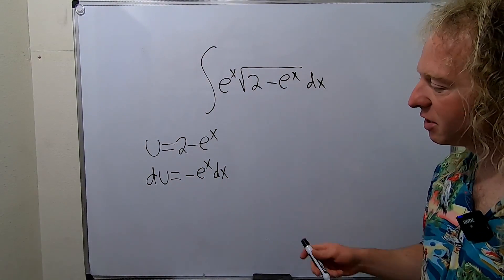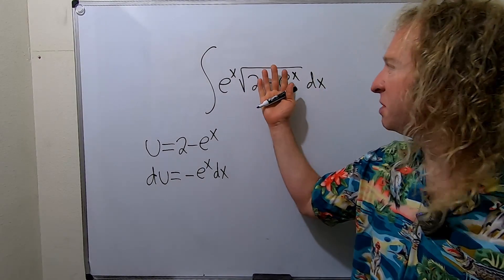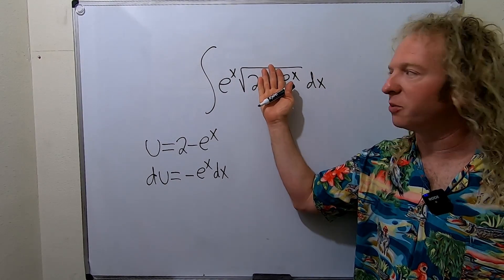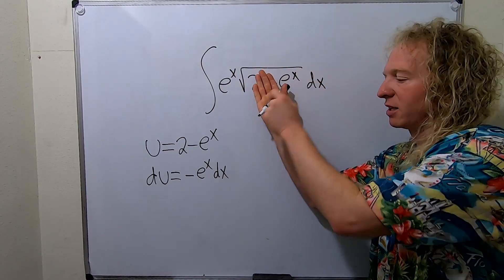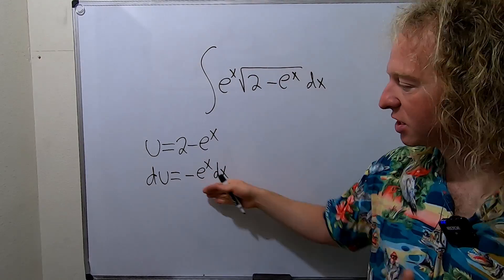Okay so the goal now is to make this look like this. So this piece is taken care of because this is going to be a u. So we're left with e to the x dx. But here we have a negative. So we just have to get rid of the negative.